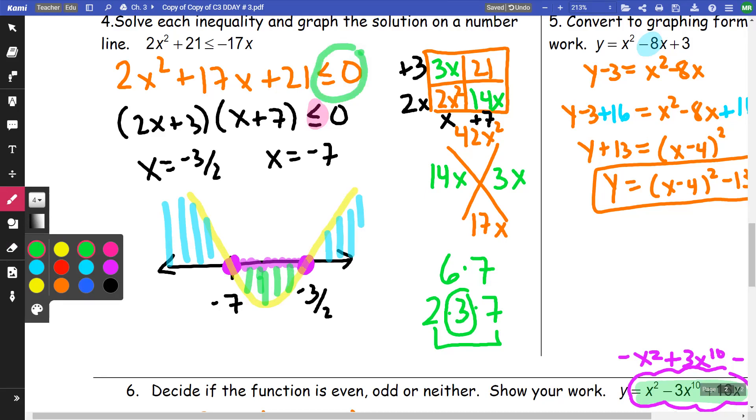I want it to be less than or equal to or below. So that's where I'm going to shade in between negative 7 and 3 halves, negative 3 halves.